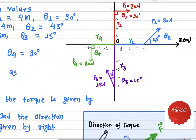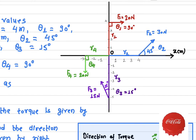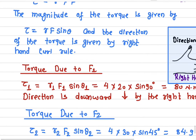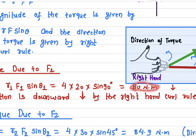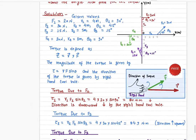Let's start with F1. This is the force and this is the position vector. The angle between them is 90 degrees. So the magnitude of the torque is given by r1·F1·sin(θ1). R1 is 4, the force is 20 newtons, and sin(90°) is 1, so multiplying together gives 80 newton-meters. That's the magnitude. Now, how do we find the direction?